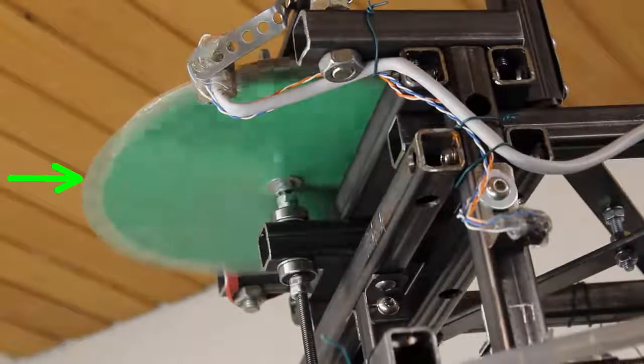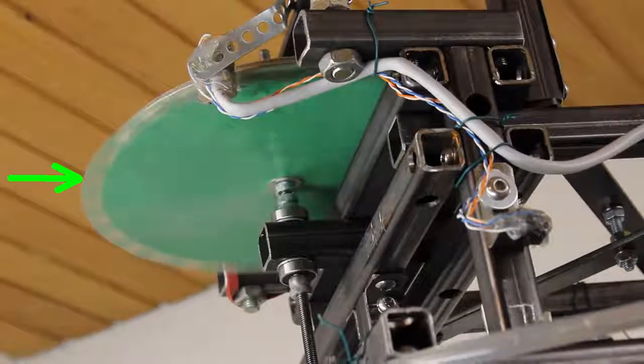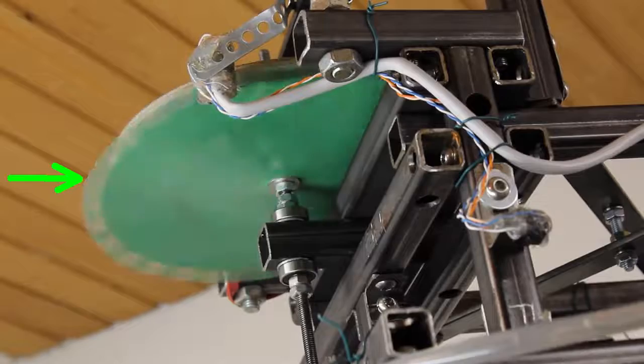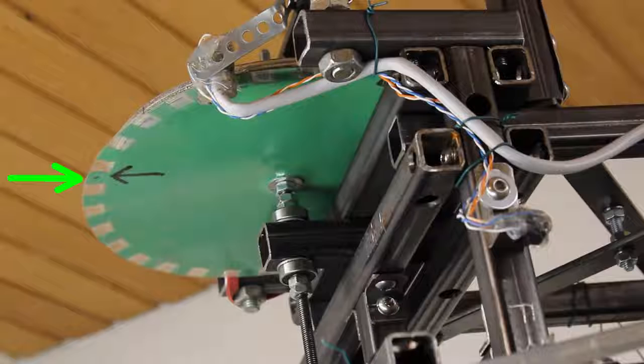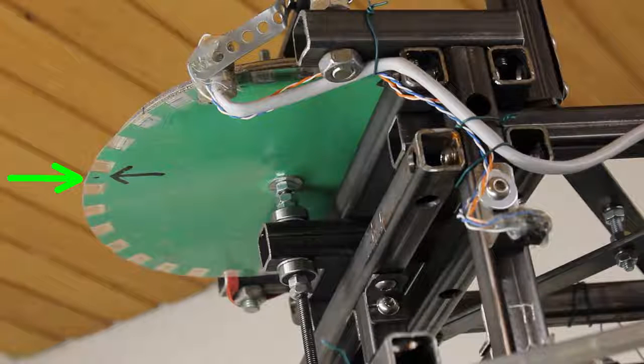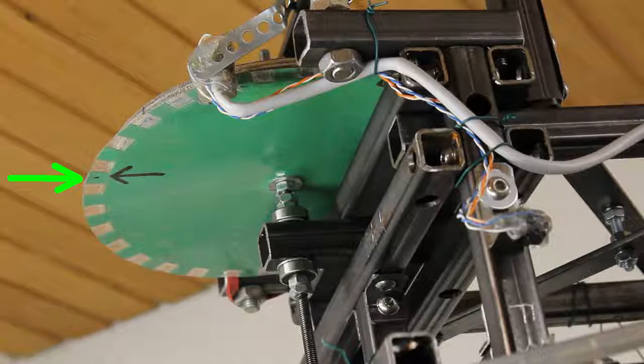Mark one tooth on each sensor disc and move all axes 1000 or more steps in one direction and the same number of steps into the opposite direction. If the markings on the discs are at the initial position, the Arduino hasn't lost steps and everything is okay, if not, you must find the error.